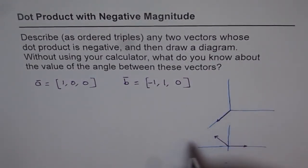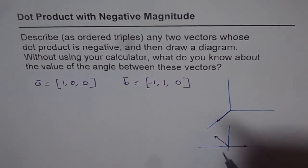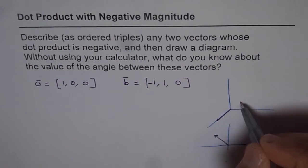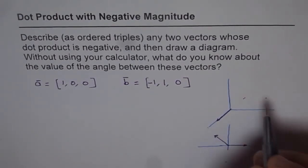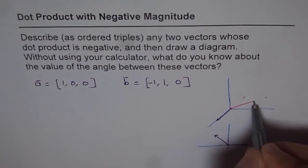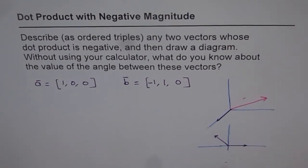So now if I have to plot this, then the other vector is actually minus 1, means I have to move one unit this side, and then 1 on this side. So that is my vector b. So this is, now I have two vectors here.